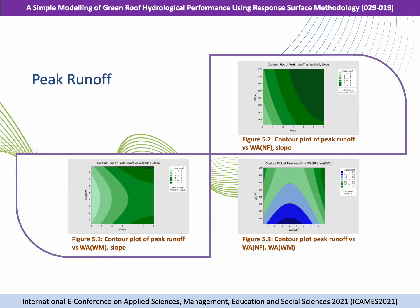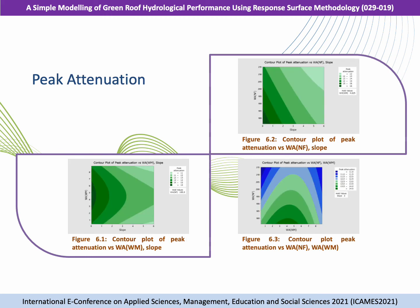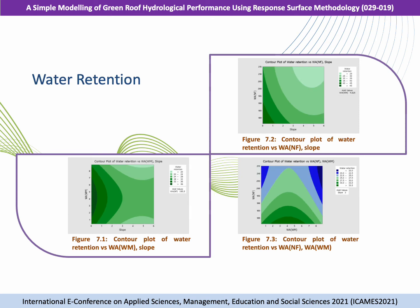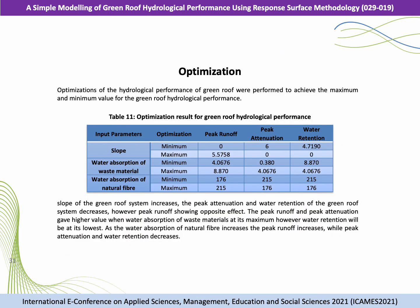Figures 5.1, 5.2, and 5.3 indicate the contour plots related to peak runoff, showing that the darker the color, the higher the output value, while the lighter the color, the lower the output value. The same applies to peak attenuation — the 2D contour plot indicates the highest and lowest regions of peak attenuation. Water retention contour plots can also be seen in Figures 7.1, 7.2, and 7.3. From all the contour plot analyses, it can be concluded that the optimization of the hydrological performance of green roof was performed to achieve the maximum and minimum values.